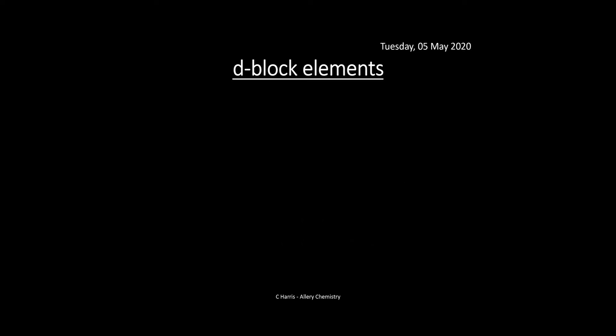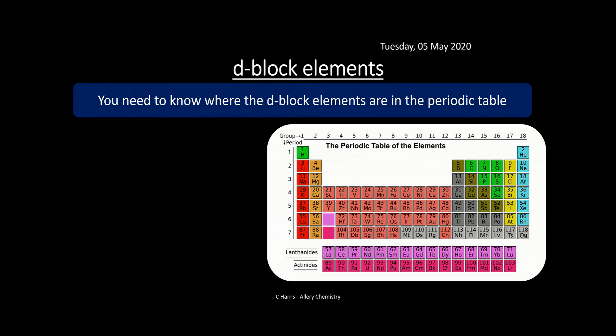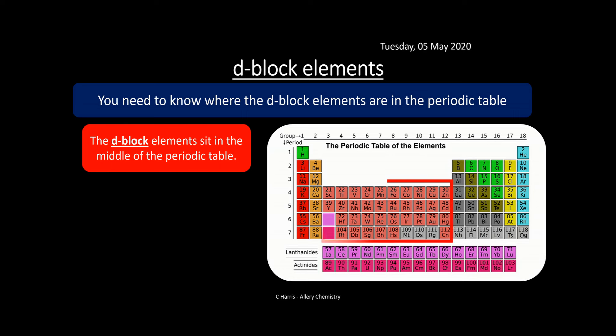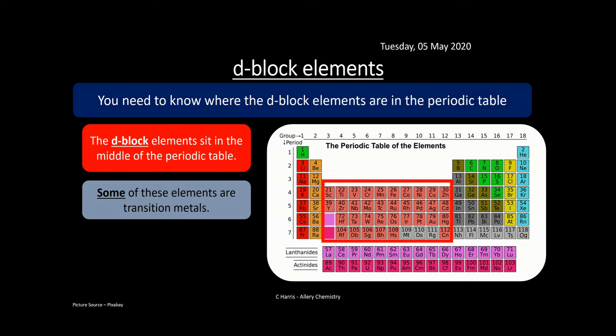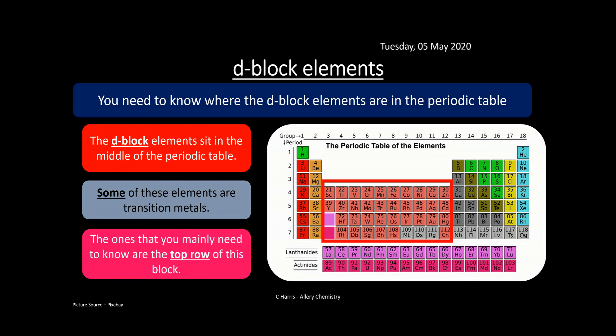Let's start with d-block elements. We need to know where the d-block elements are in the periodic table. The d-block element is the block in the middle of the periodic table. Some of these elements are transition elements - not all of them. They're all d-block elements but not all are transition elements. The ones you need to know are in the top row of this block, and these are the ones we'll mainly use throughout the video.